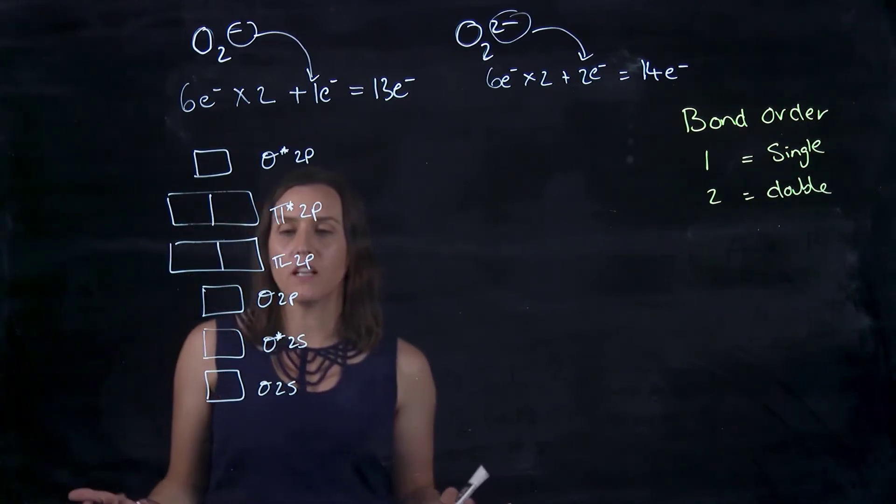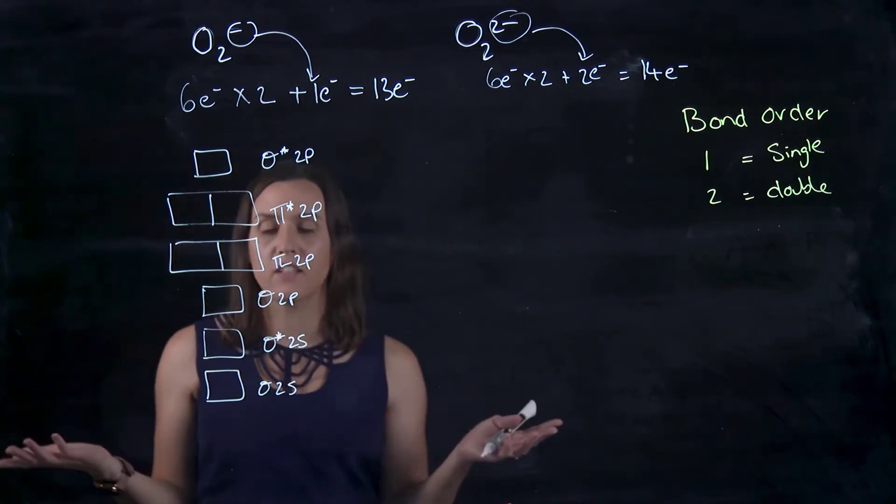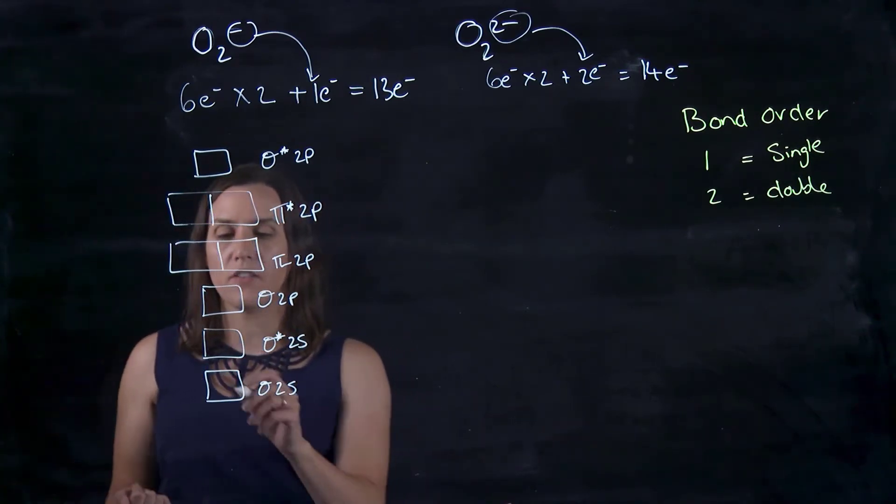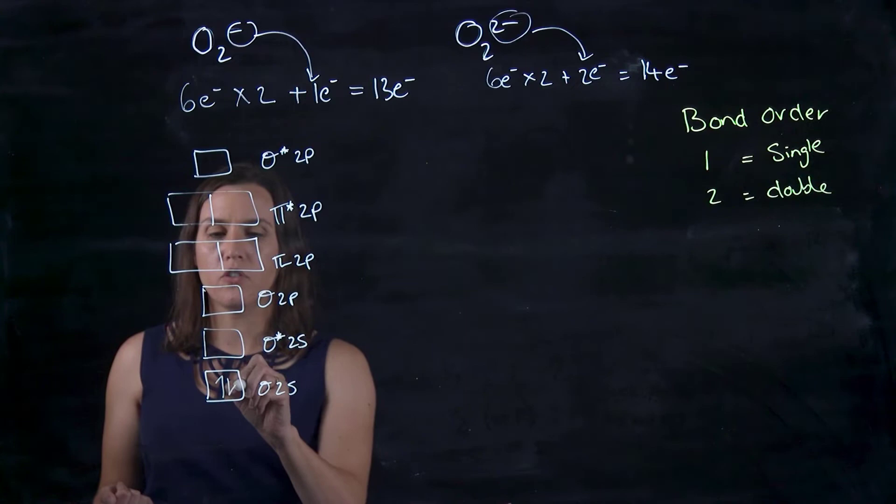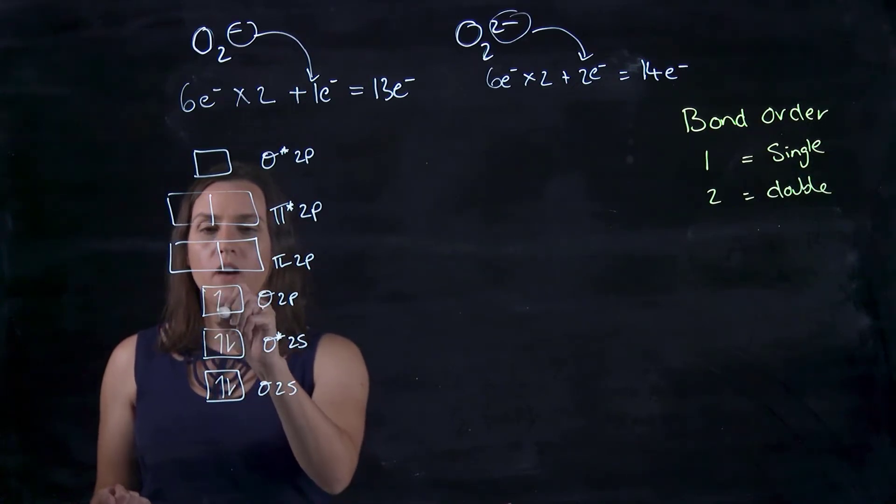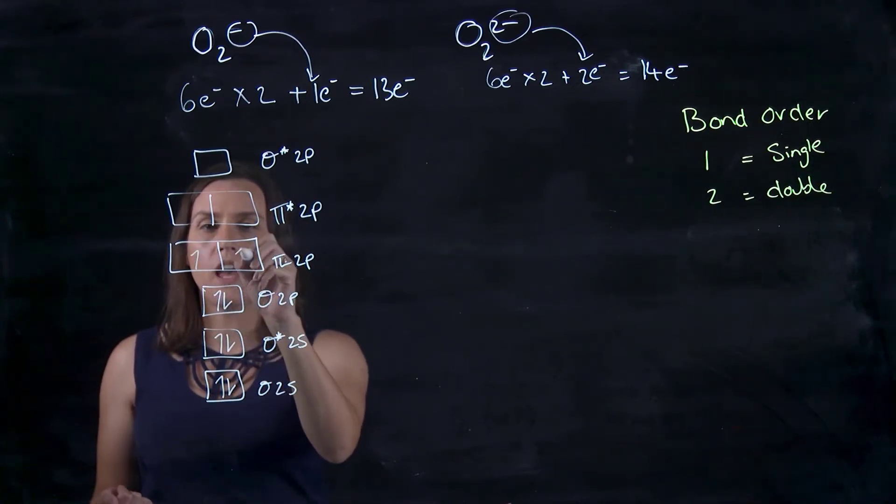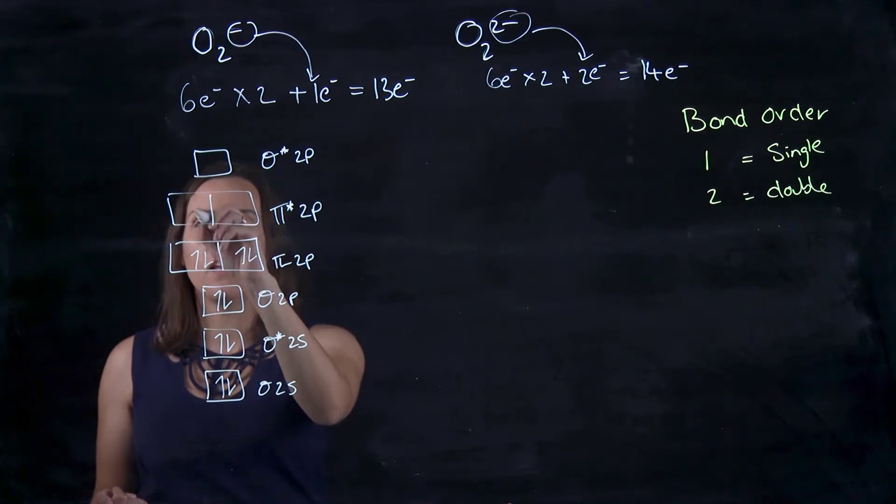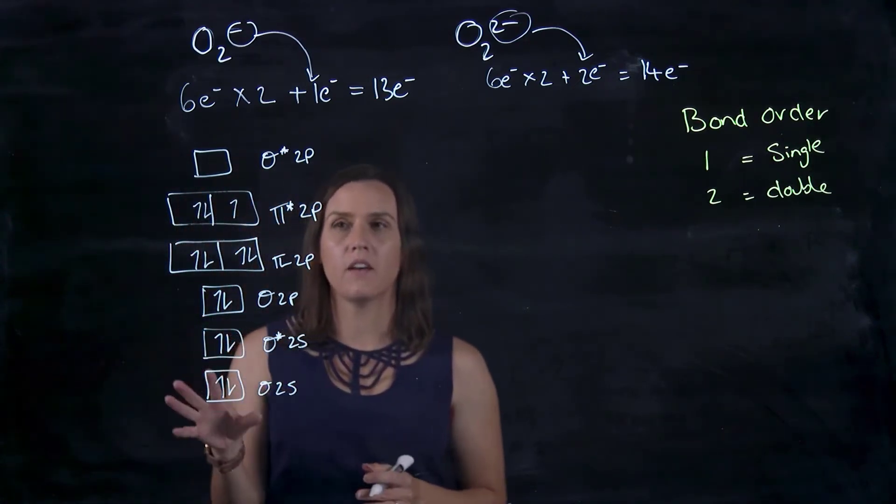So if now I've got 13 electrons that are in that valence shell, so the second energy level, I would go 1, 2, 3, 4, 5, 6, 7, 8, 9, 10, 11, 12, 13. So that's how that one would look like.